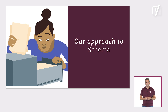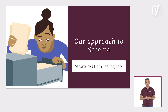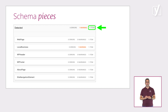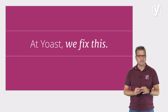It revealed that sometimes it was not implemented optimally. I would test the site's code with the structured data testing tool, which, by the way, is now replaced by the rich results testing tool. And when testing, I would get something like this. There are six schema pieces on that page, but they lack context. It is not clear what their relationship is. How are these things connected? To a search engine, this is still a puzzle that needs solving. At Yoast, we fix this.